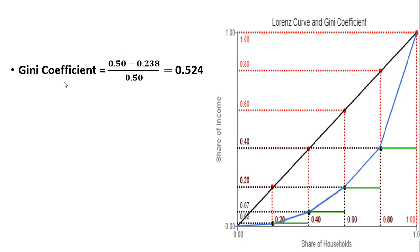So now just putting in our values here. As I said, the denominator is going to be 0.5. And in the numerator, we're going to take 0.5 minus our answer we found on the last slide, 0.238. So what am I doing in the numerator? That calculation is getting us this area here between the black line and the blue line. And once we do that, we get a Gini coefficient of 0.524.